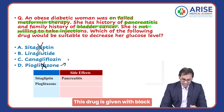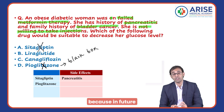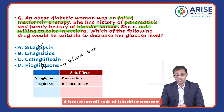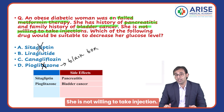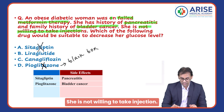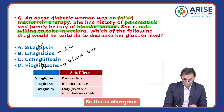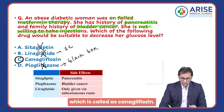Pioglitazone carries a black box warning because it has a small risk of bladder cancer in the future. So these two drugs are out. She is also not willing to take injections, and liraglutide can only be given through the subcutaneous route, so that is also gone. You are left with option C.